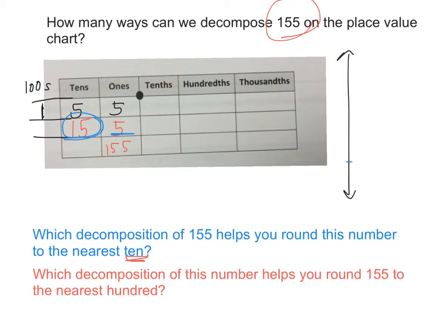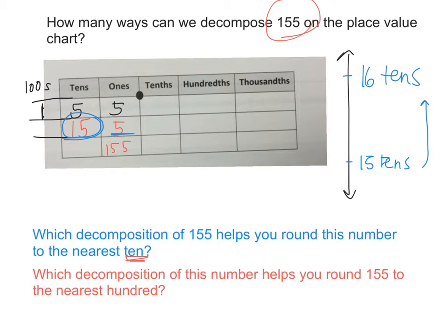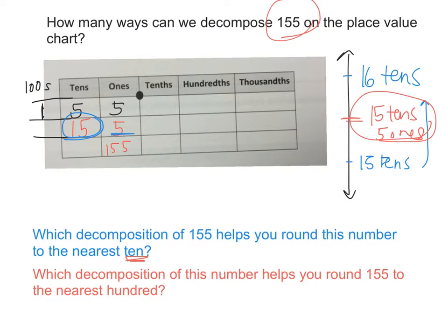This one helps us, right? Because on my vertical number line — and this is what I want you to draw — I have fifteen tens at the bottom. What would be the next amount of tens? Sixteen tens. How many ones would I need to add to get from fifteen tens to sixteen tens? Ten ones. So what number is right in the middle of fifteen tens and sixteen tens? Fifteen tens and five ones. Do you see how that is the midpoint between fifteen tens and sixteen tens? That's where one hundred fifty-five is — right in the middle.